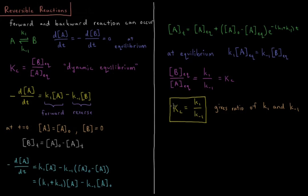The equilibrium constant gives the ratio of the forward and reverse rate constants, and also tells us the equilibrium concentrations of A and B. Notably, the effective rate at which the system equilibrates is not the difference but the sum of the rate constants. As K1 or K-1 gets bigger, the reaction approaches equilibrium faster — increasing either the forward or reverse rate constant increases the rate at which species concentrations approach their equilibrium values.